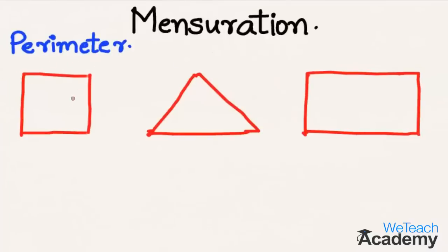So here there is a square with the side s, and perimeter is nothing but the boundary of a closed geometrical figure. So the boundary can be calculated by just adding the length of all the sides. So here we get s plus s plus s plus s, which is equal to 4s.